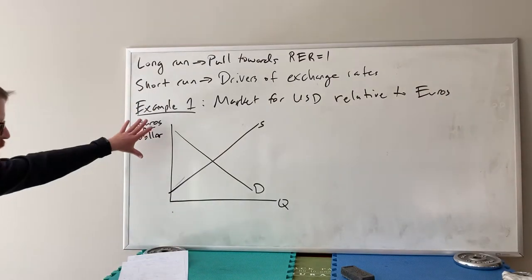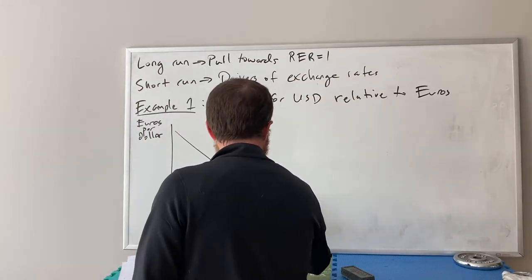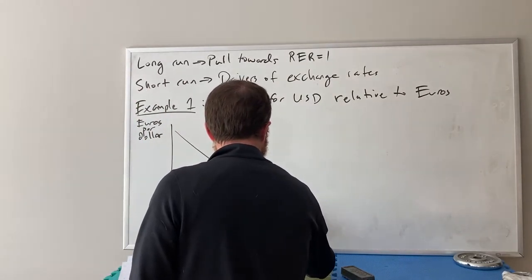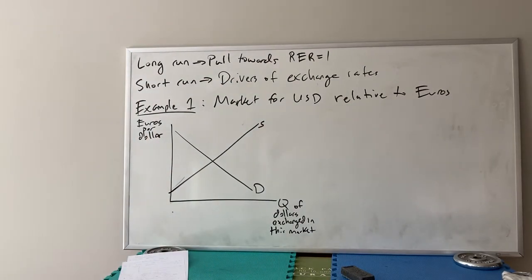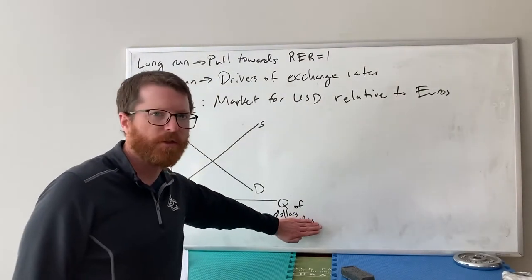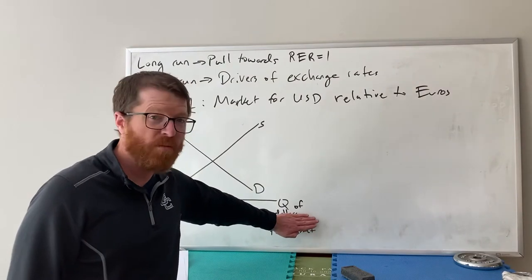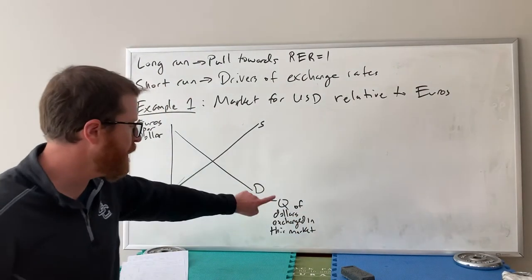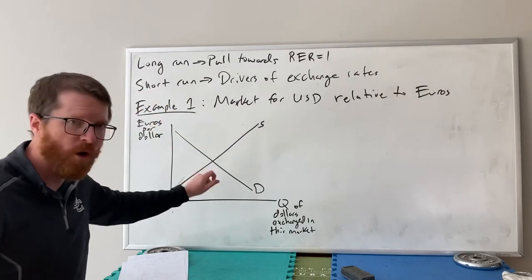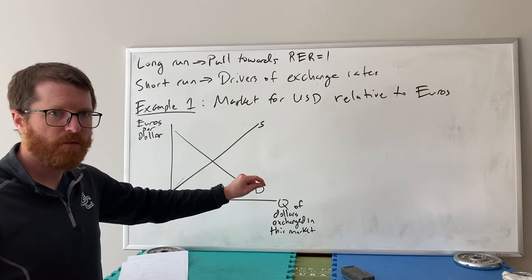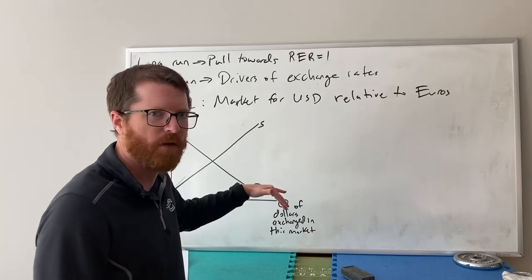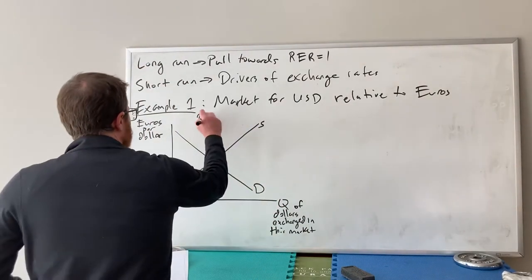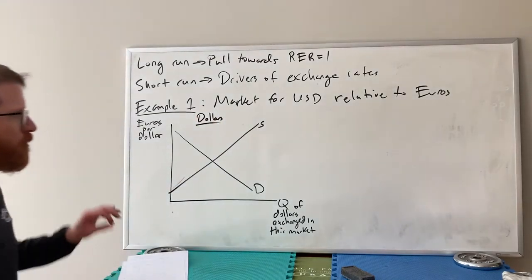On the price axis we have euros per dollar — the price of dollars specifically relative to euros. On the quantity axis we have the quantity of dollars exchanged in this market. This is specifically the quantity of dollars exchanged in the euros-for-dollars market. If you bought a coffee downtown or exchanged currency for Mexican pesos, that's not in this market. This is a very specific market: dollars relative to euros only.